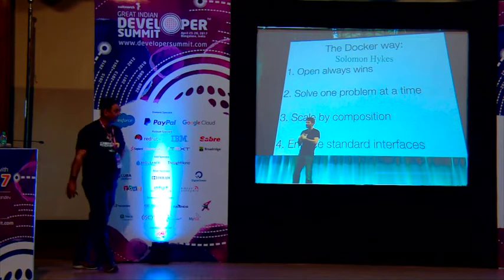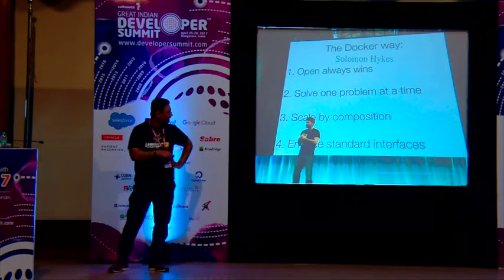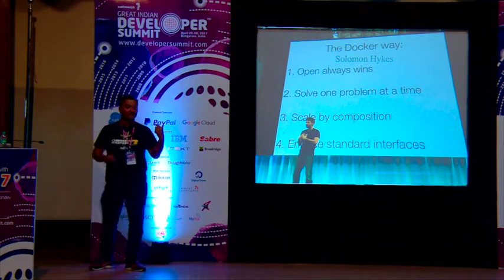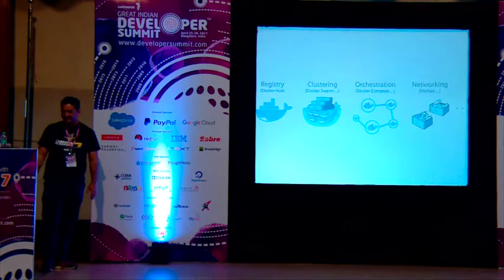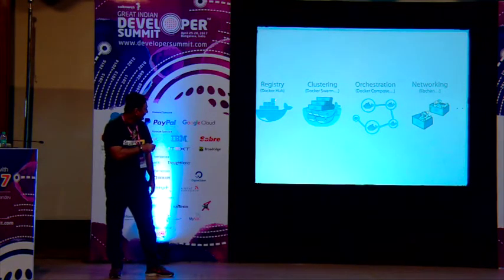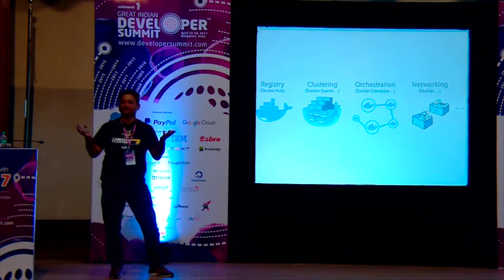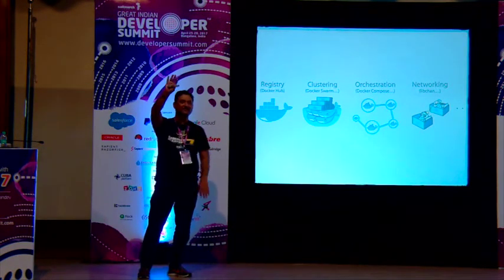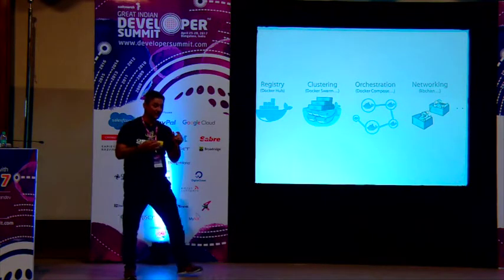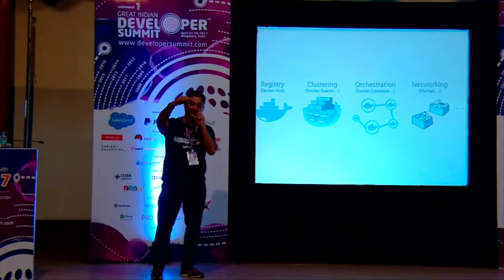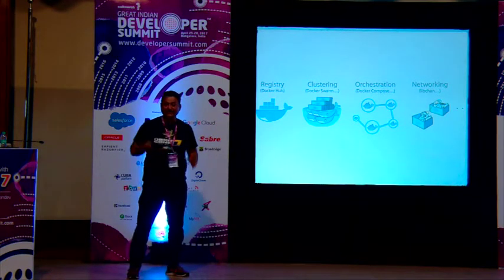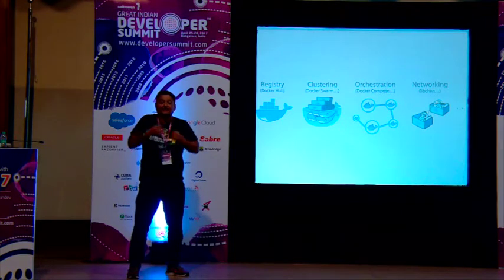Docker solved one problem at a time and made it open source — that's the main reason Docker has been widely adopted, and everyone has adapted to these standards. There's something called Docker Hub, which is just like GitHub. Just like GitHub has code, Docker Hub has images. If you have to install Cassandra from GitHub you'd need to get the code, build it, configure it — but with Docker Hub you just download an image that has a working running version of Cassandra and run it.